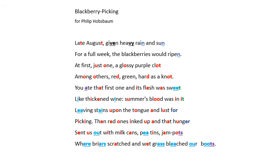If you look at some of the phonetic structure of this verse, you don't get such a strong sense of rhyme. There are some half rhymes: sun, ripen, clot, knot, sweet, in it, hunger, pots, boots. Those half rhymes create a clear structure, but it's the rhythm of the poem that is most important, and that is reinforced through the regular use of assonance and the plosives.